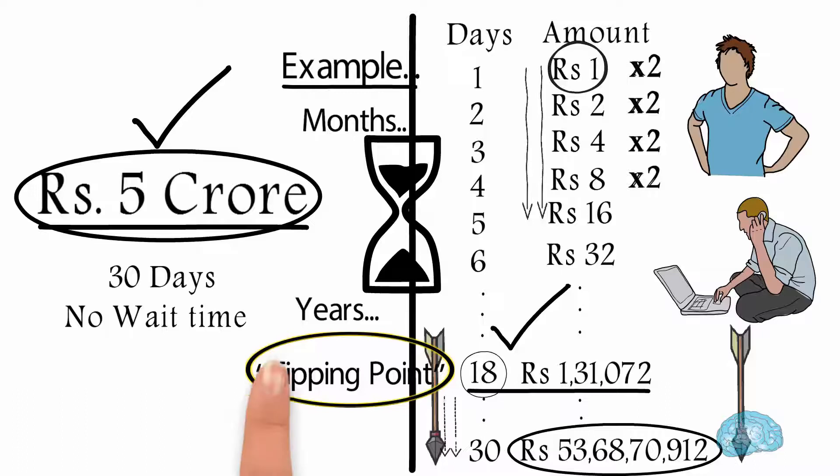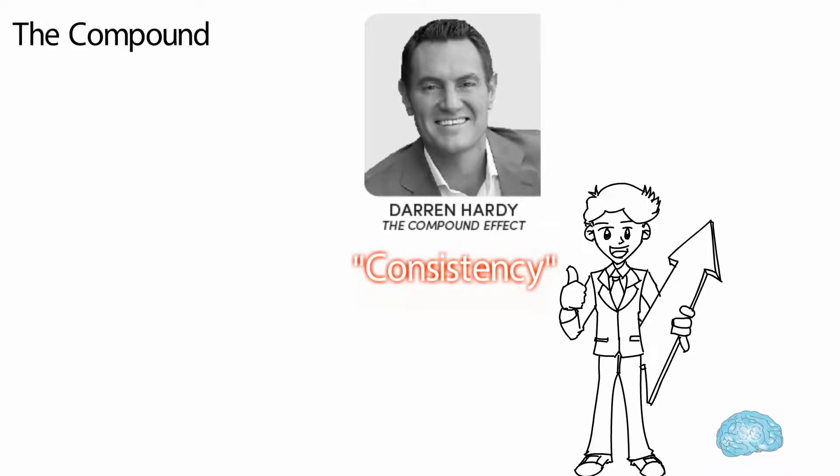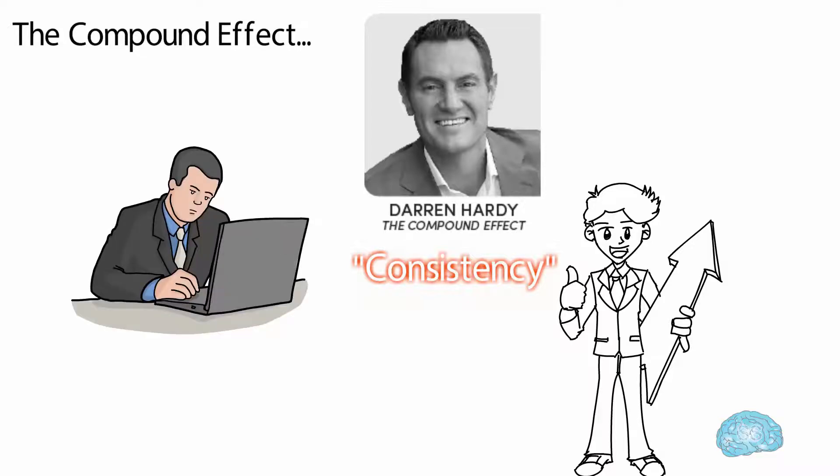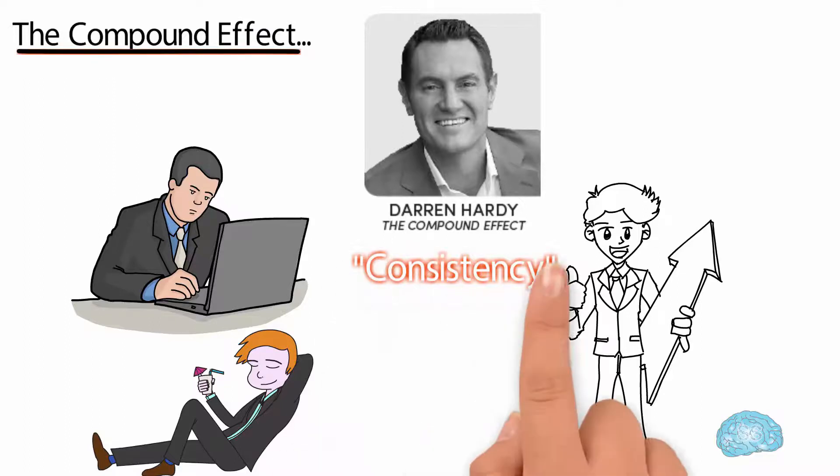Although Darren focuses on consistency to see results using compound effect, if you do a particular activity today but you are not consistently doing it every day, then you cannot benefit from compound effect. Consistency is the key for compounding, and consistency cannot be achieved without patience. So patience and consistency go side by side to start the compound effect.